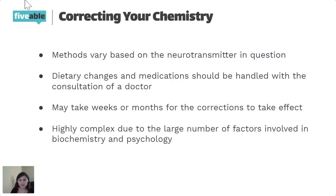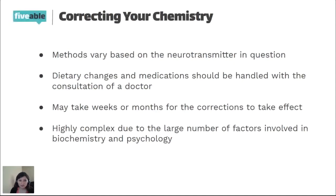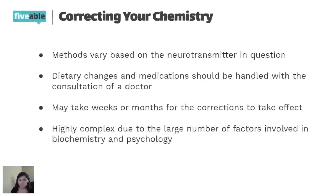Getting into actually correcting your brain's chemistry: the methods will vary based on the neurotransmitter in question. Dietary changes and medication should be handled in consultation with a doctor, since they have a large impact and may work differently in each person's body. It might take weeks or months for corrections to take effect, as it's highly complex due to the large number of factors in biochemistry and psychology.